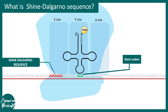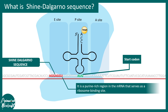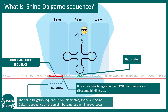Here is the start codon and here is the Shine-Dalgarno sequence. You can see the Shine-Dalgarno sequence is a purine-rich sequence, which contains mostly A and G.